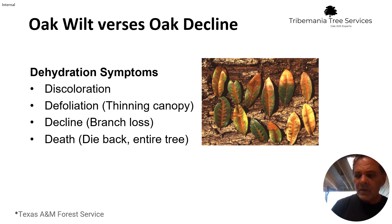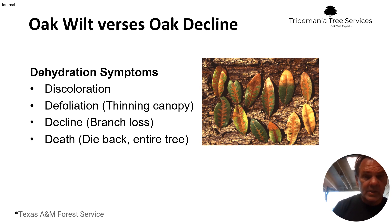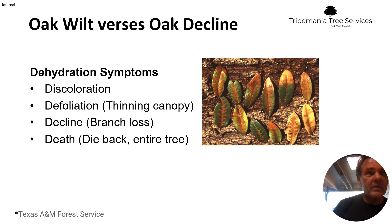The first symptom that will show up when a tree is declining, whether it's from oak wilt or oak decline, is discoloration in the leaves. The leaves will begin to change color — if the tree is healthy and hydrated, the leaves will have a dark green tint, but if there's stress or oak wilt involved, the leaves are going to be changing colors and showing discoloration.